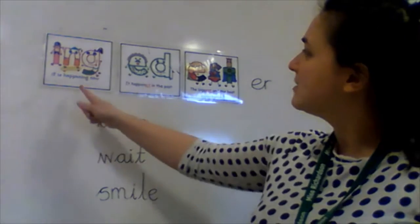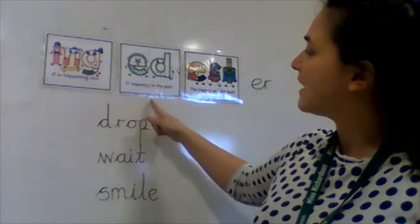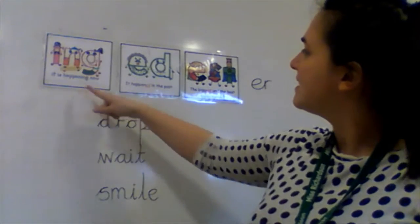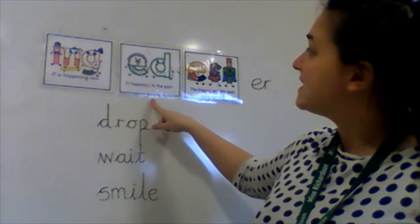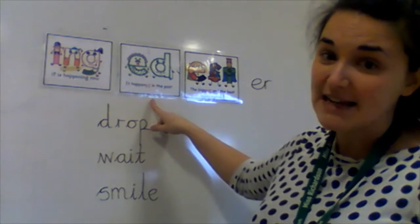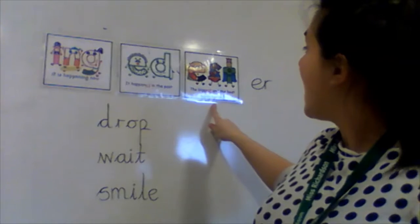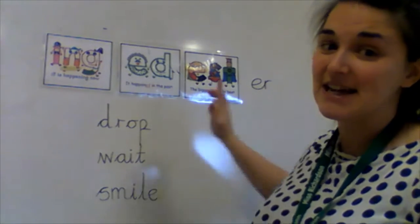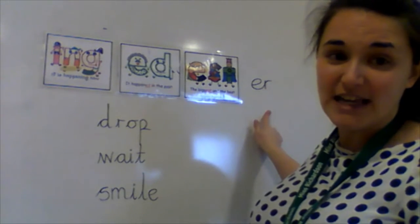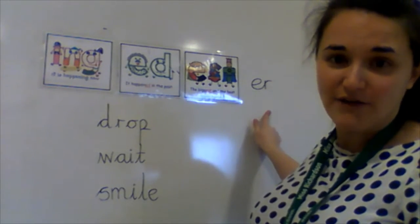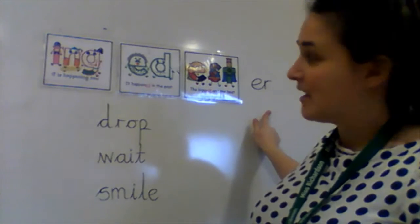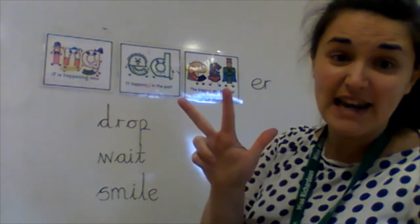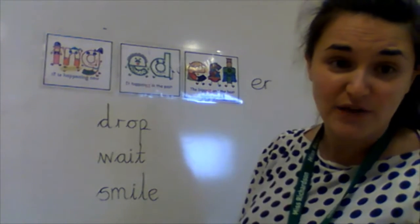We started looking at our suffixes. We have 'ing', 'ed' which means it's in the past tense, 'est' but we sound it as 'ist', and our 'er' suffix. And we learned three rules linked to these suffixes.